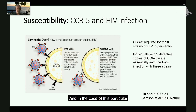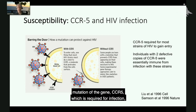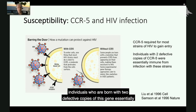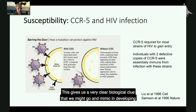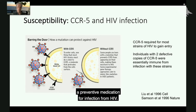And in the case of this particular mutation of the gene CCR5, which is required for infection, individuals who are born with two defective copies of this gene are essentially completely prevented from being infected by certain strains of HIV. This gives us a very clear biological clue that we might go and mimic in developing a preventive medication for infection from HIV.